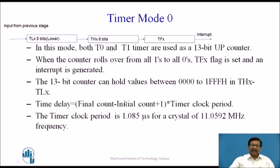What we load into TLX and THX is the initial count. The required time delay equals the final count minus the initial count plus 1, multiplied by the timer clock period. For 13-bit up-counting, the final count is 1FFFH. The timer clock period is 1.085 microseconds for a crystal of 11.0592 MHz, because the frequency given to the timer is the oscillator frequency divided by 12.